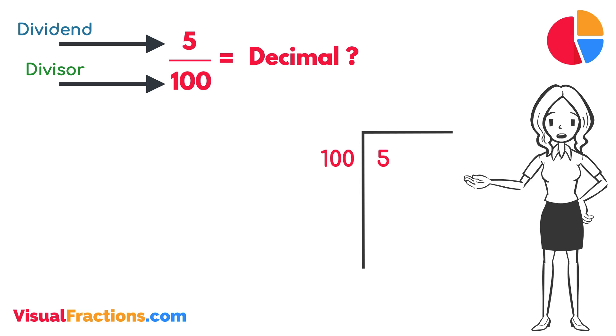Since 100 doesn't fit into 5, we add a decimal point in our answer and append 2 zeros to 5, making it 500.